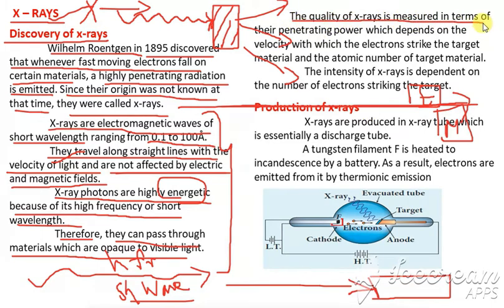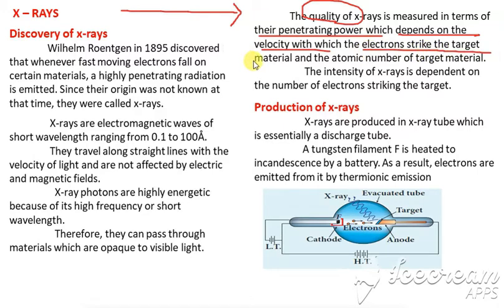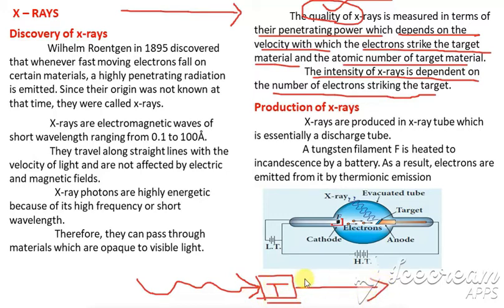The quality of X-rays is measured in terms of their penetration power, which depends on the velocity with which the electrons strike the target material and also the atomic number. The intensity of X-rays is dependent on the number of electrons striking the target — intensity is how bright the light is, and it depends on the number of electrons.